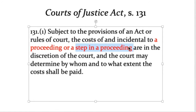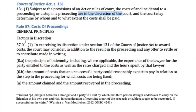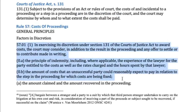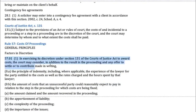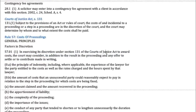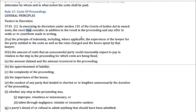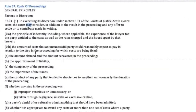There is ample discretion to the trial judge, including making no cost award at all, and this creates significant appellate deference to cost awards. So despite that deference, we do have some factors in rule 57.01. But even when getting into these factors, the rules hedge it — to remind us that in exercising its discretion under s.131, the court not 'has to' but 'may' consider these things. So the message is: don't go running to the Court of Appeal if you got a cost order against you and the judge didn't mention all of these factors because it's fundamentally discretionary.